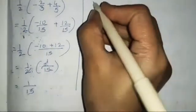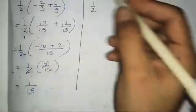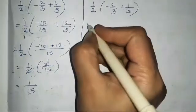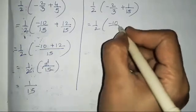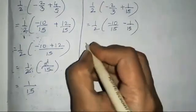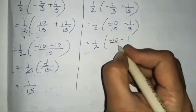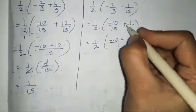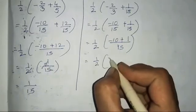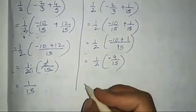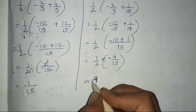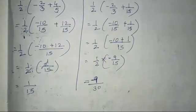For the next set, we take -2/3 and 1/15. Half of (-2/3 + 1/15) = half of (-10/15 + 1/15) = half of -9/15. So 1 into 9 is minus 9 and 2 into 15 is 30. Answer: -9/30.